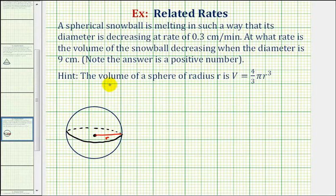The first thing we need to remember is the volume formula for a sphere is V equals four-thirds pi r cubed, where r is the length of the radius. Notice in this problem, we're given information about the diameter of the sphere, not the radius.